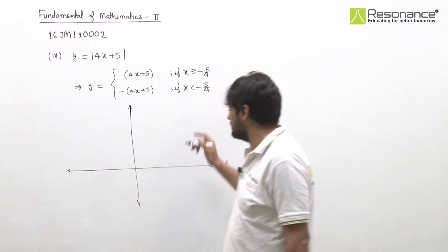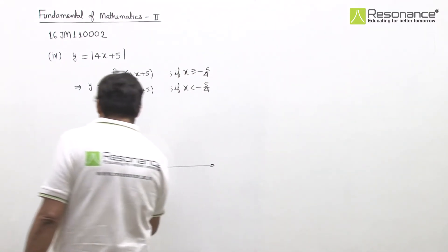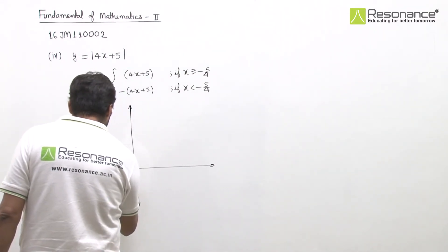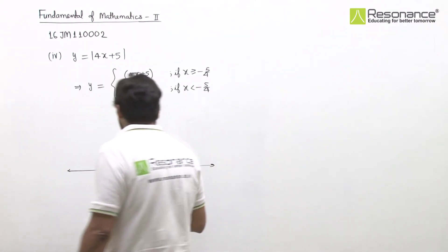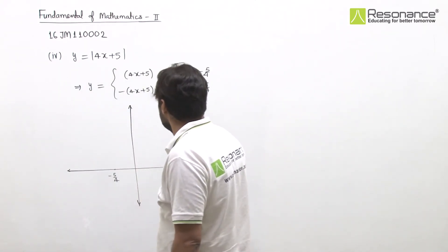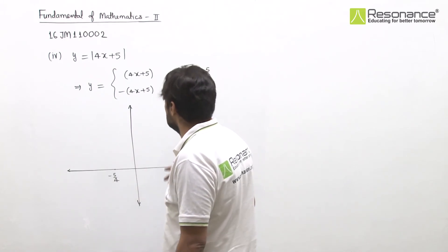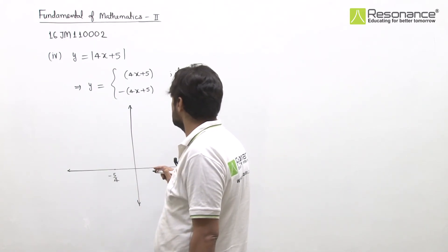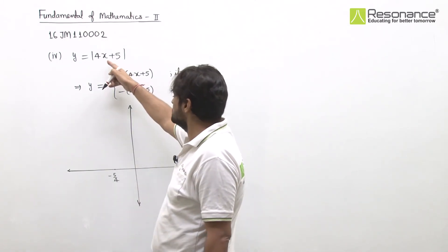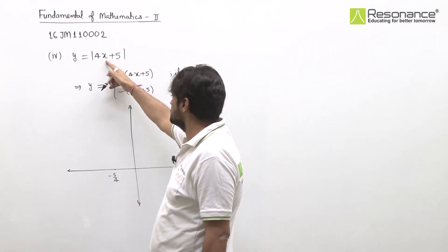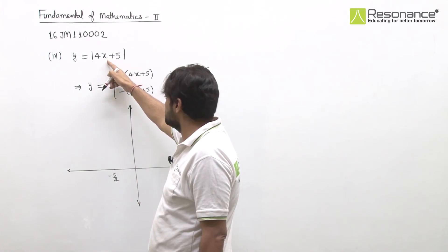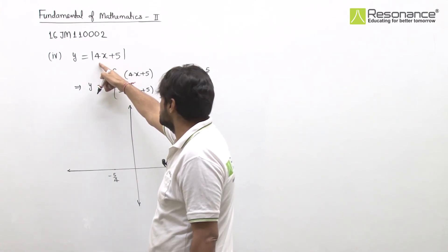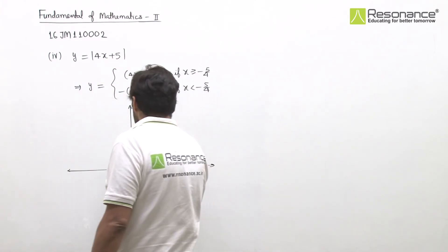The changing point is x = minus 5/4. For values greater than minus 5/4 — say x = 0 — the value is 5. For x = 1, it will be 4 times 1 plus 5 = 9, wait — let's say putting in gives positive values. For values less than minus 5/4, the expression inside is negative but modulus makes it positive.